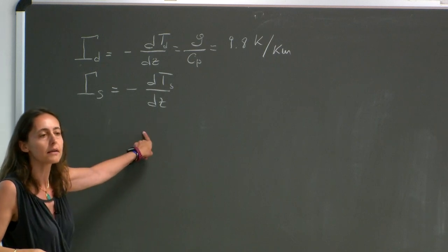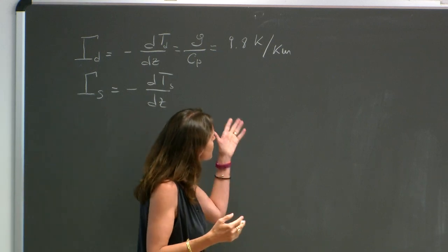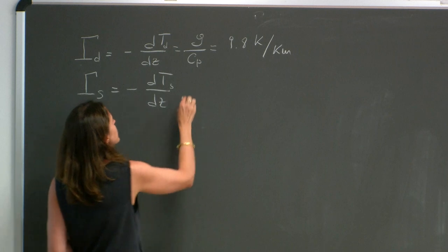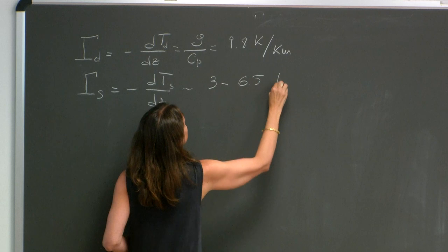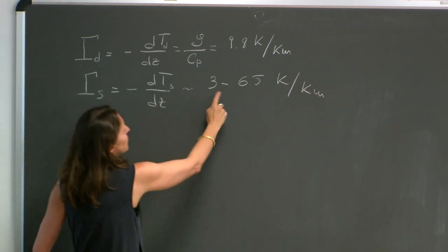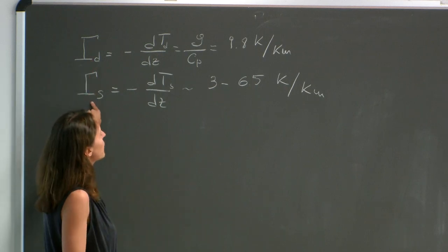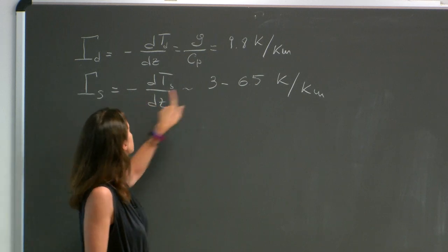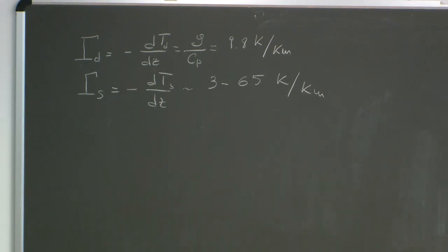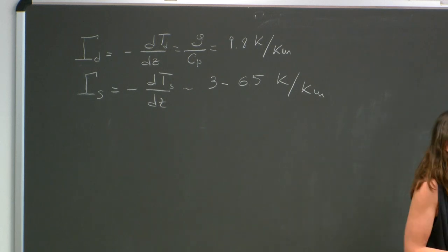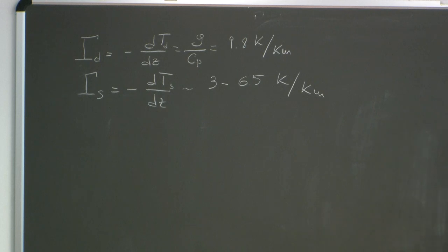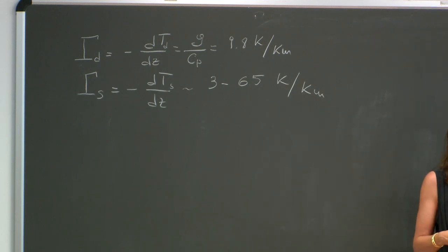The saturated lapse rate represents how temperature changes in a displacement in which a parcel goes up saturated. Unlike the dry adiabatic rate, it's not a single number—it changes with height, depending on temperature and moisture content. Depending on where you are, it's about 3 to 6.5 Kelvin per kilometer, lowest where you have more moisture lower down. As you go higher and higher, because you're getting rid of all the moisture at very low temperatures, the saturated lapse rate approaches the dry adiabatic lapse rate. The moist adiabat is less steep—meaning this number is smaller than the dry adiabatic lapse rate—because as a parcel reaches saturation above its lifting condensation level, latent heat will partially compensate for the cooling associated with the adiabatic expansion.